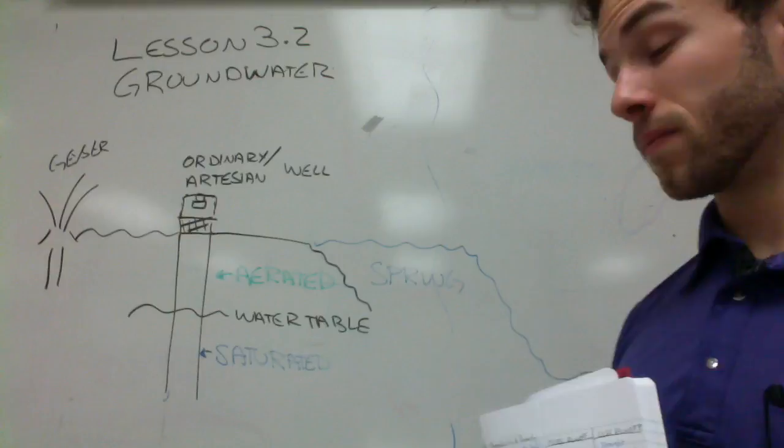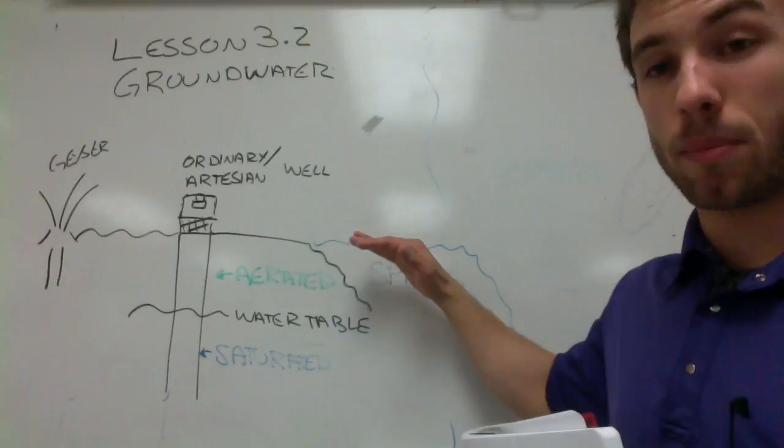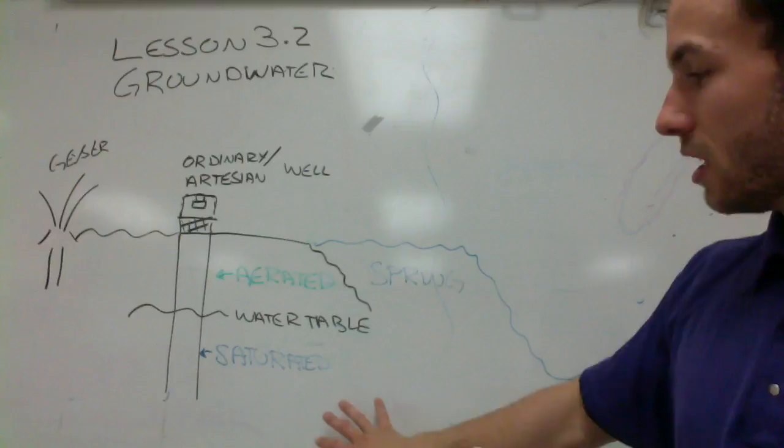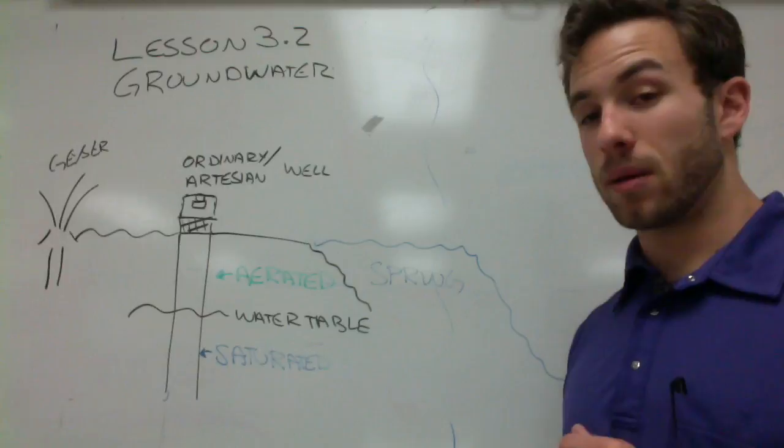There are also other sources where we're going to see groundwater come up to the surface of the earth. One is going to be a spring or a hot spring. In these areas, the zone of saturation and the water table actually goes above the earth's crust, allowing that water to leak up and forward. When we see hot springs as opposed to regular springs, it's because the water has been heated by the magma in the earth — the magma is closer to the surface and heats the water.